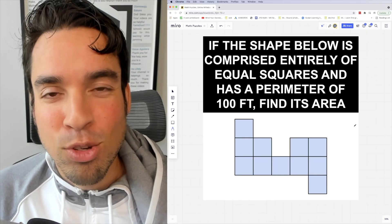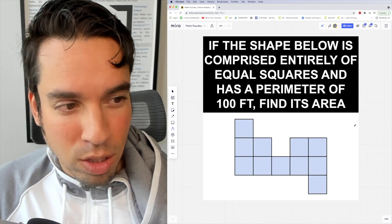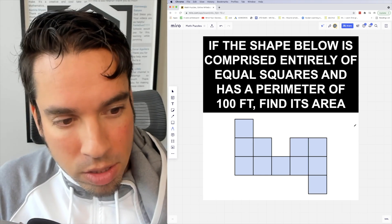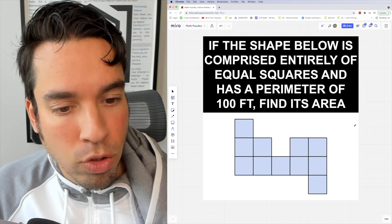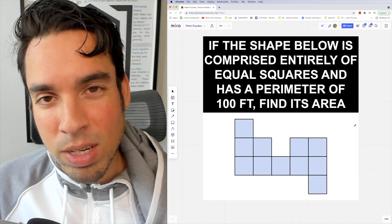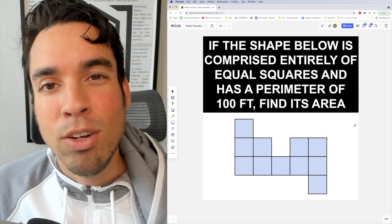What's up everybody and welcome back to another math puzzle. In this one, the question is: if the shape below is comprised entirely of equal squares and has a perimeter of 100 feet, find its area. Go ahead and hit that pause button and see if you can figure it out. When you're ready, hit play and I'll give you the explanation.